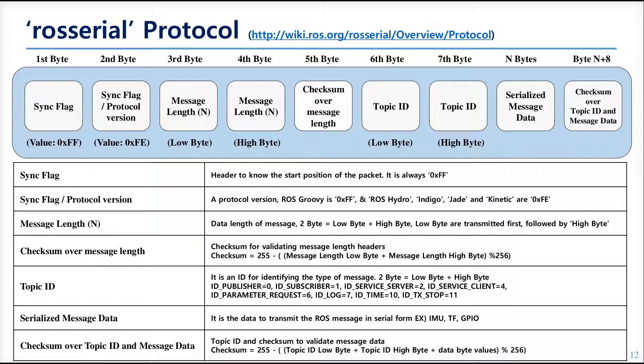The header of the packet starts with FF in hexadecimal — this is called the sync flag in ROS serial. The protocol version was changed at the ROS Groovy turning point. The message length and checksum figures are very common in packet structures. Topic ID is necessary for every ROS communication, and the message contains the data, like sensor data.